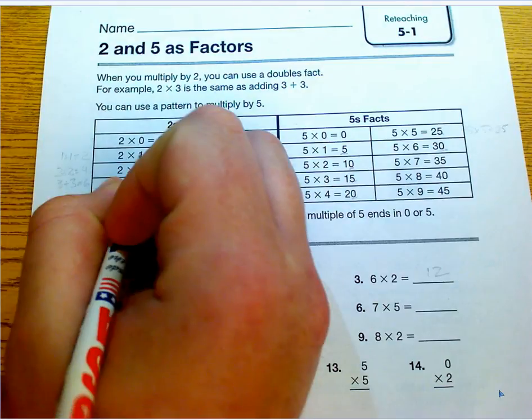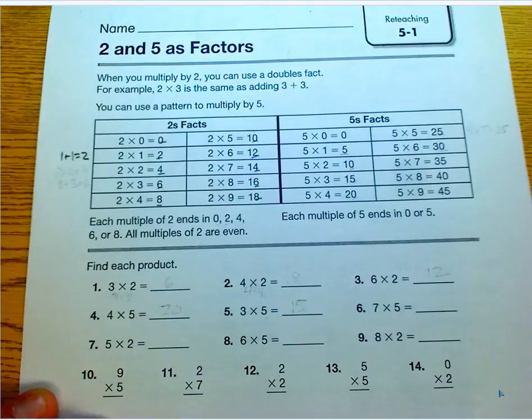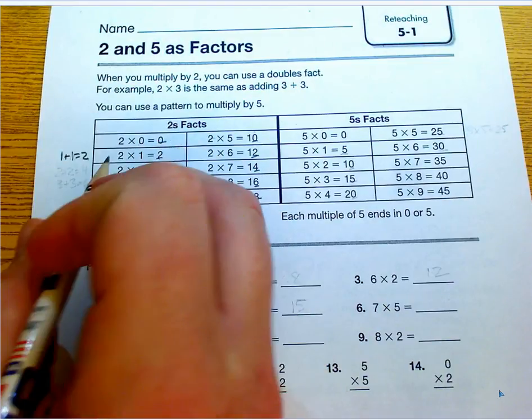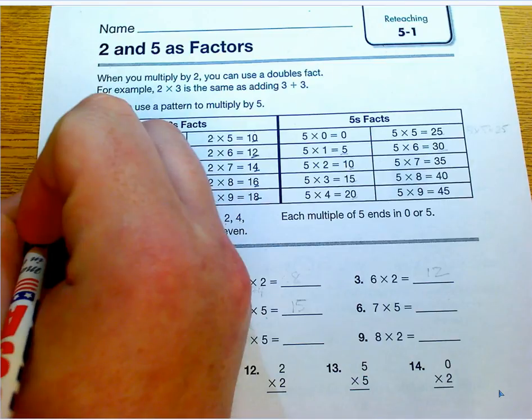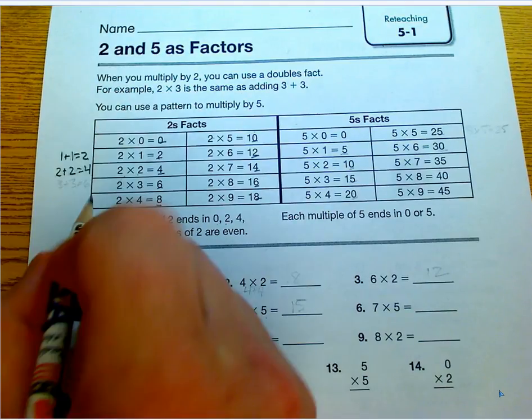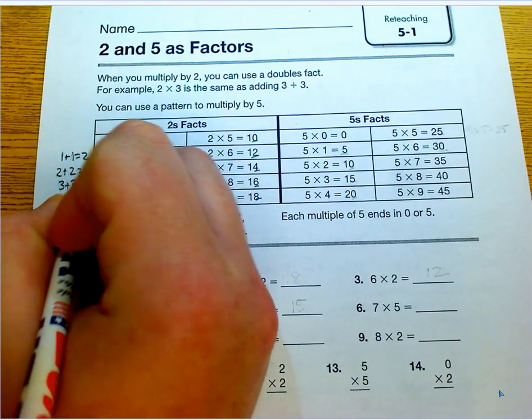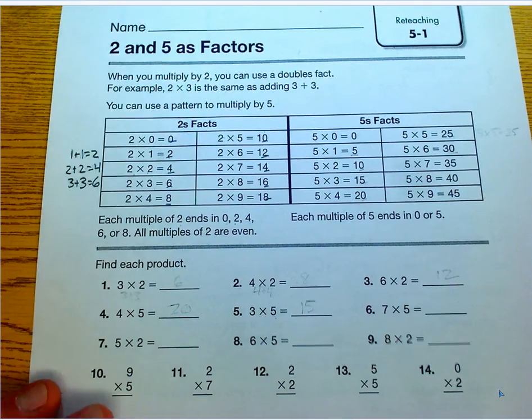So if I have 2 times 1, I have 1 plus 1 equals 2 to get my answer. For 2 groups of 2 or 2 times 2 is 2 plus 2 equals 4, 2 groups of 2. 2 times 3 would be 3 plus 3 equals 6 and so on. You can do those doubles all the way through.